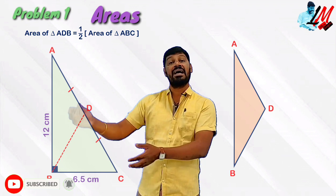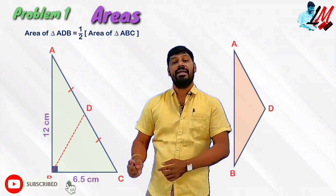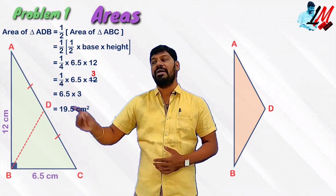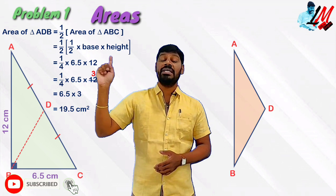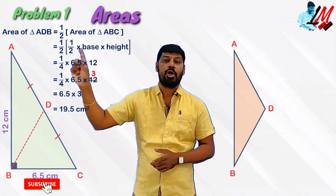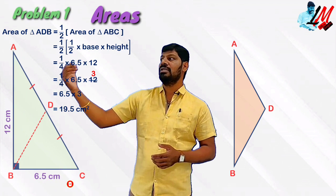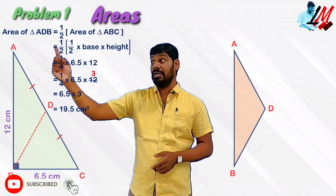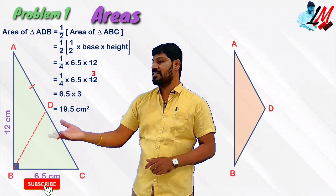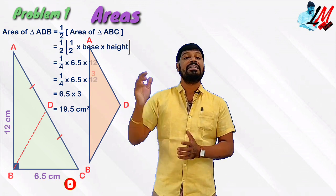Triangle ABC is a right triangle with one side 12 cm and the other side 6.5 cm. The area of ADB equals half the area of ABC. Applying the half into base into height formula inside the bracket: base is 6.5 and height is 12. This gives us 1/4 into 12 into 6.5. Simplifying: 3 into 6.5, which equals 19.5 square centimeters — the area of the required triangle ADB.